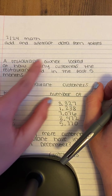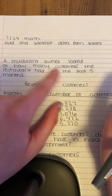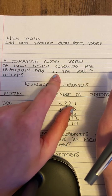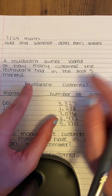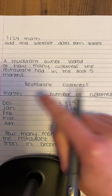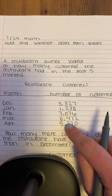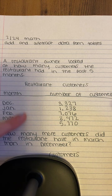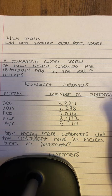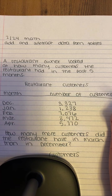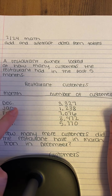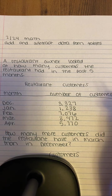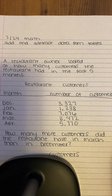Here I have a restaurant owner who looked at how many customers the restaurant had in the past five months. I have my restaurant customers, my months, and the number of customers each month. And as you can see, connecting to our language arts, we have the abbreviation of our months — remember, the first letter is capitalized and there's always a period. So we're adding a little combination of language arts and math.